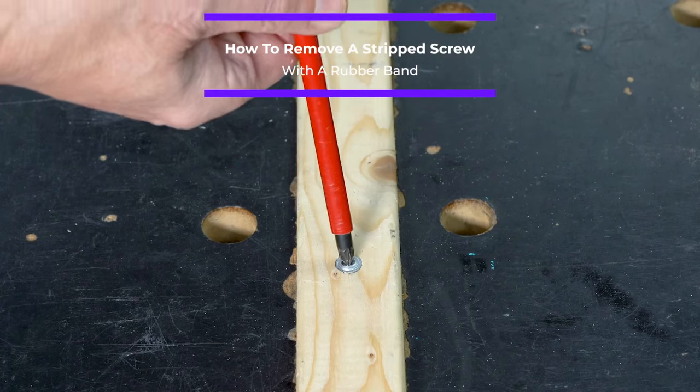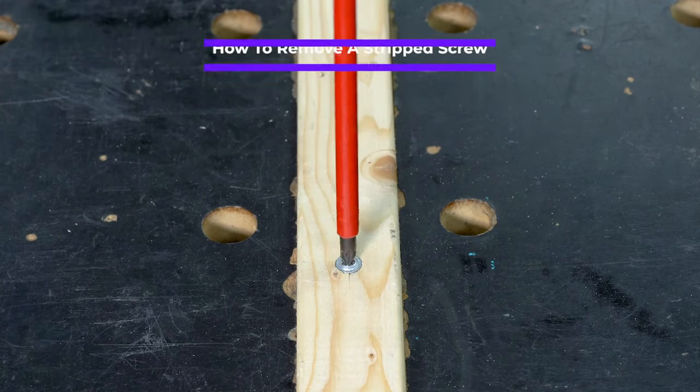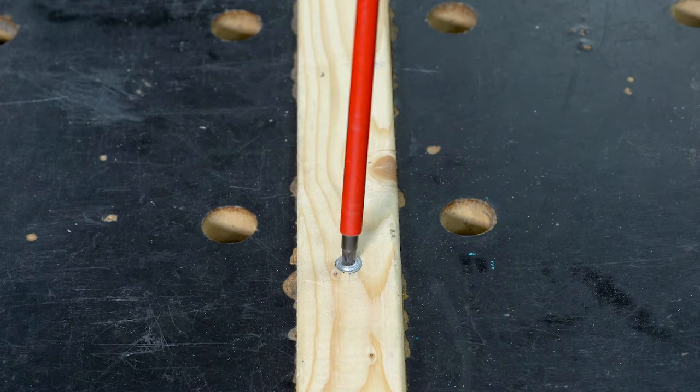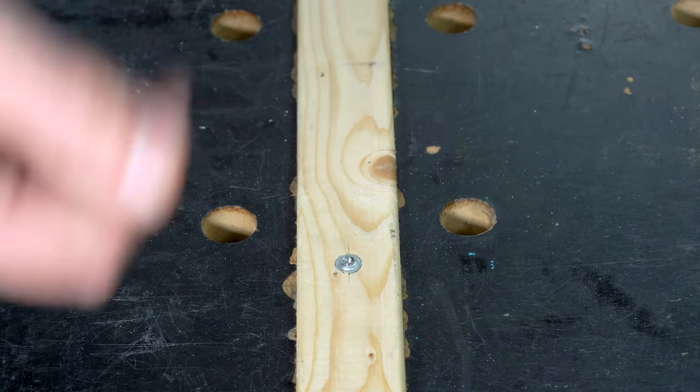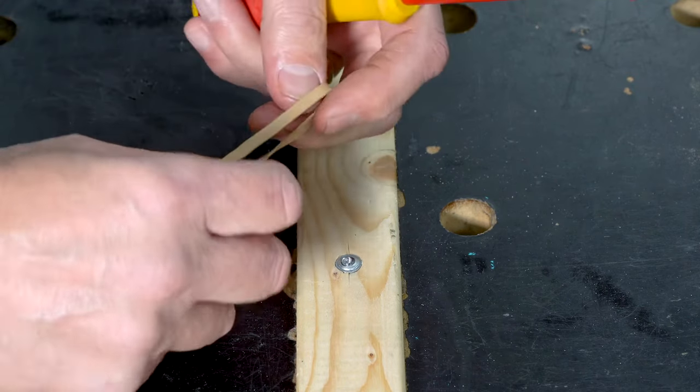You can see here we've got a screw that's been totally rounded off. I can just no way get any grip on that. As seen on some other videos, I'm going to try the elastic band method.